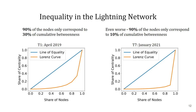But how has it changed since then? 21 months later in January 2021, now 90% of the nodes make up for slightly more than 10% of the betweenness. Or to put it differently, 10% of the nodes participate in 90% of the transaction routes, which is even worse than before. Subsequently, we can conclude from this observation that within 21 months the centralization has risen by 20%.